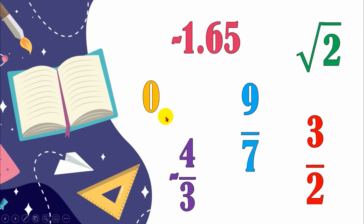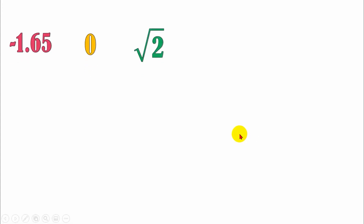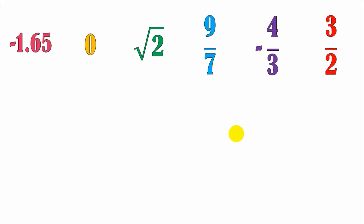So let's arrange the following. Which one should come first? Which is the least? Which is the greatest? Let's arrange our real numbers properly. We have negative 1.65, 0, square root of 2, 9 out of 7, negative 4 out of 3, and 3 out of 2. Remember, this is not yet arranged in its increasing order. What you're going to do is to change all of these numbers into their decimal form, so we can see which is the least and which is the highest.